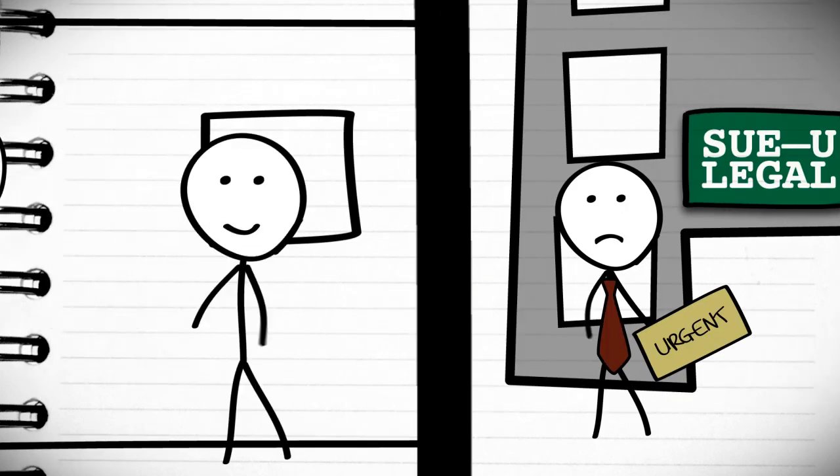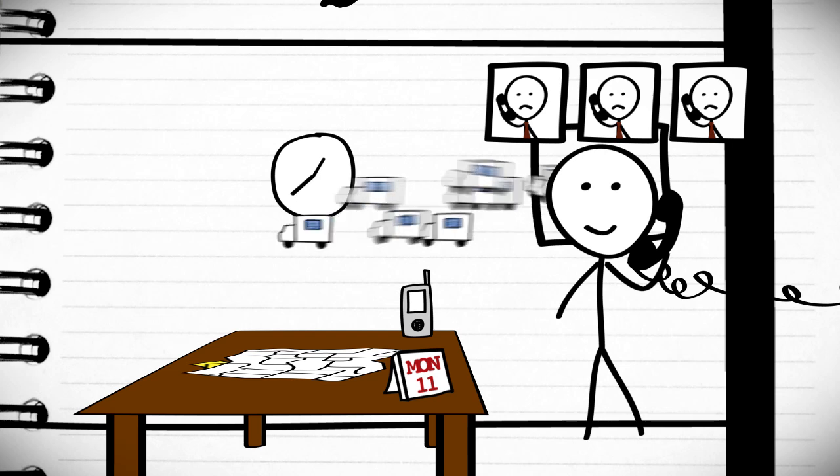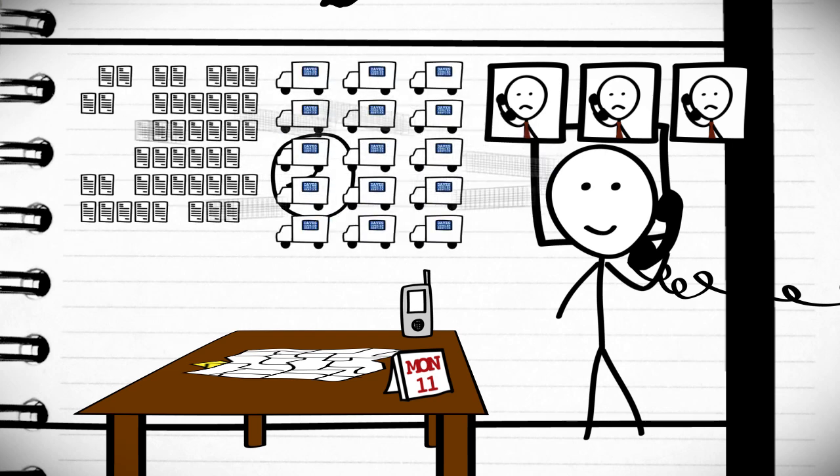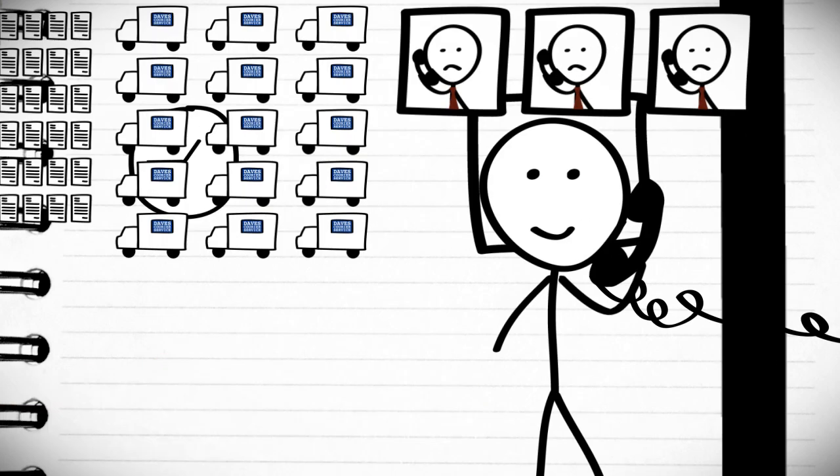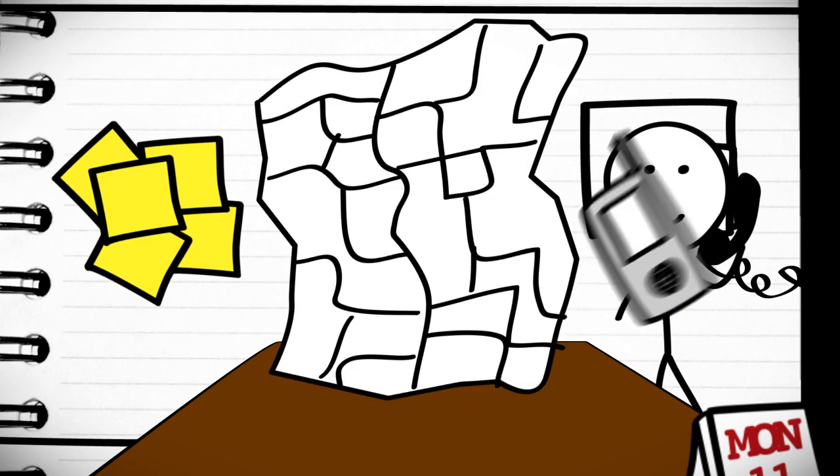This means that Dave had to take the order while he was dealing with three other customers, organizing 15 drivers, and juggling 60 other orders. And the only tools Dave had to manage all this chaos were a pile of sticky notes, a paper map, and a walkie-talkie.